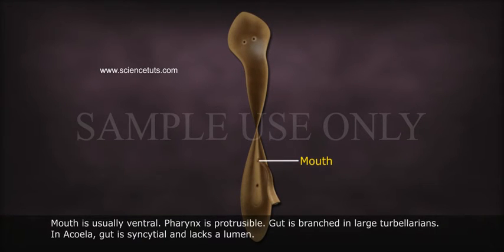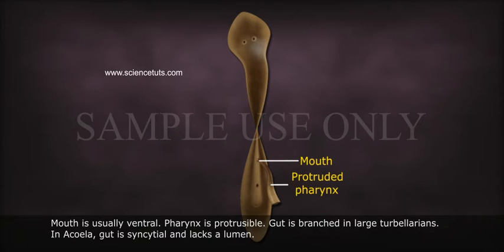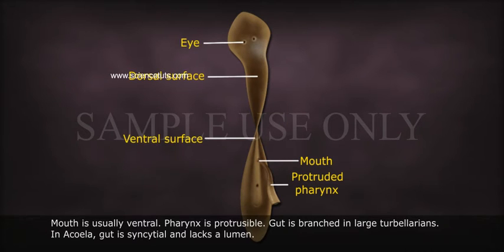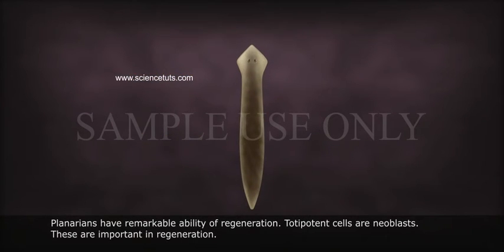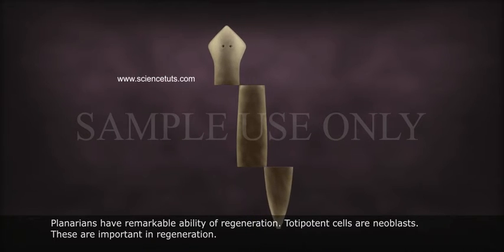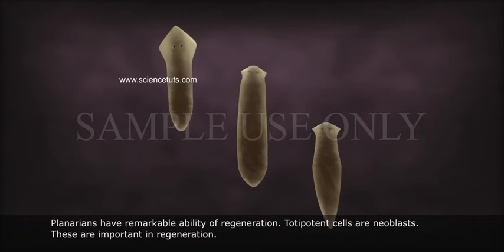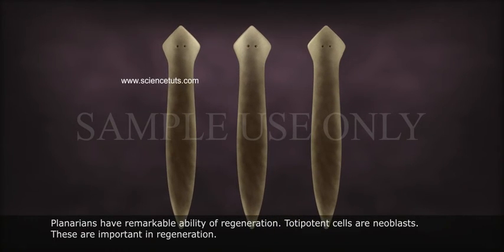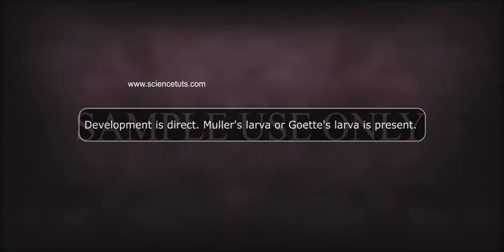Mouth is usually ventral. Pharynx is protrusible. Gut is branched in large Turbellarians. In acilia, gut is syncytial and lacks a lumen. Planarians have a remarkable ability of regeneration. Totipotent cells are neoblasts, which are important in regeneration. Development is direct. Müller's larva or Götte's larva is present.